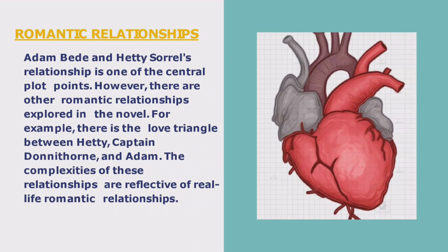Let's see the themes of the novel. Romantic relationships: Adam Bede and Hetty Sorrell's relationship is one of the central plot points. There are other romantic relationships explored in the novel, including the love triangle between Hetty, Captain Donathorn, and Adam. The complexities of these relationships are reflective of real-life romantic relationships.